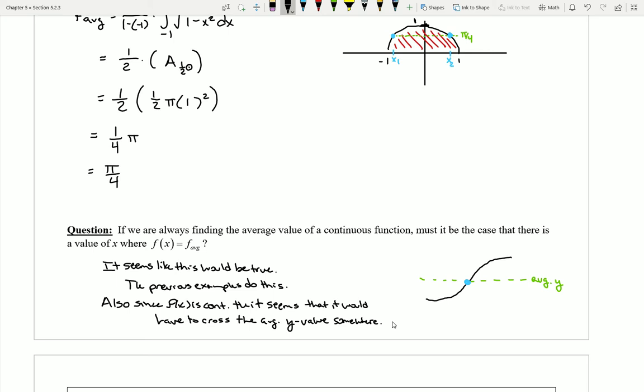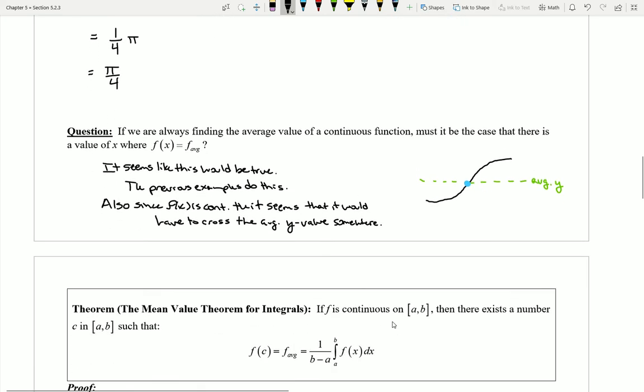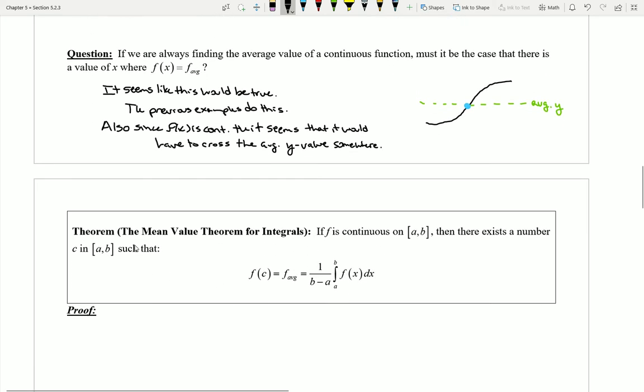So the next theorem that we're going to have is actually going to kind of tighten the screws up on this idea and make it much more precise. It's actually what we call the mean value theorem, but for integrals. We had a mean value theorem for derivatives, but now we have a new one. Let's take a look at what it says. If I have a function that's continuous on [a, b], then there definitely exists a number c.